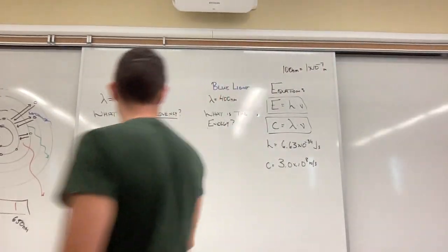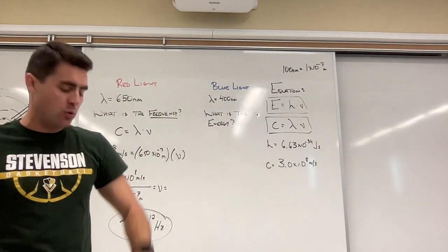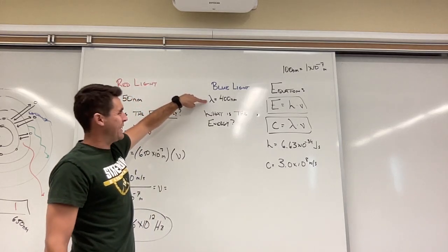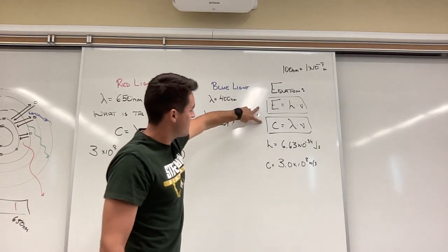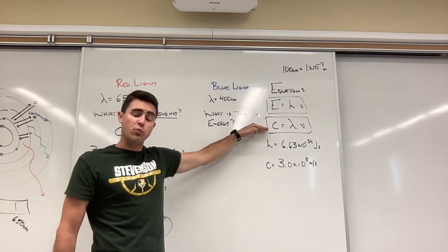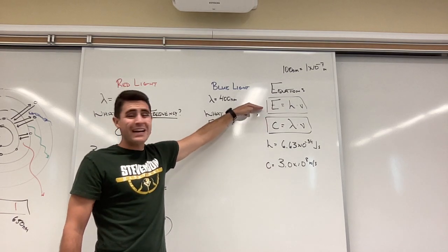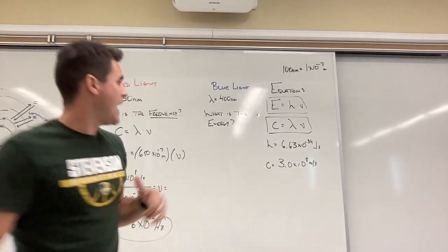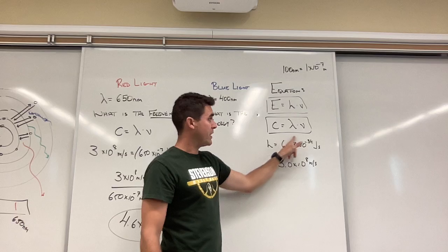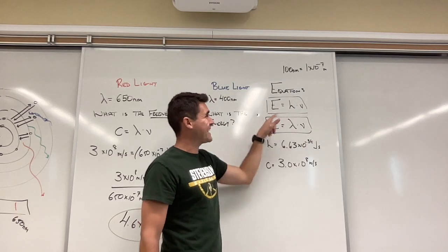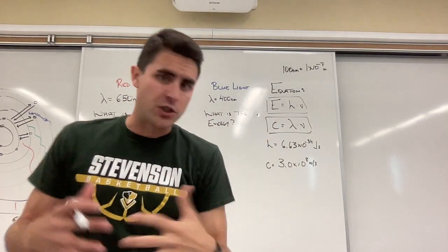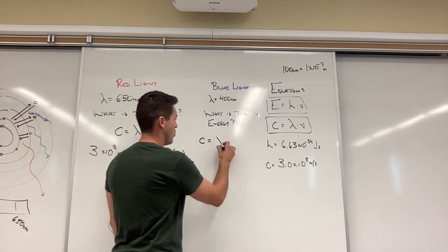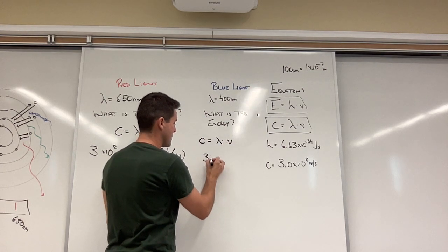Another type of question is, what is the energy associated with that blue light? If I'm thinking about the energy, I'm looking for an equation that has energy in it and has wavelength. But I don't have that equation. I've got speed of light, which is wavelength and frequency. And I've got energy, which is Planck's constant and frequency. So I don't have that equation. But I can use this first equation to find frequency and then go ahead and use the second equation to go find energy. This is kind of a two-step problem.